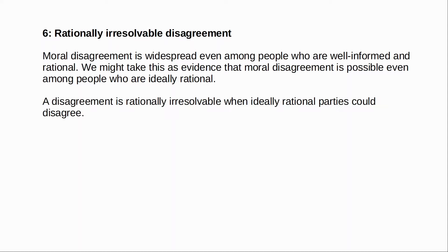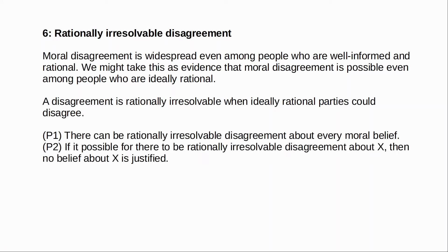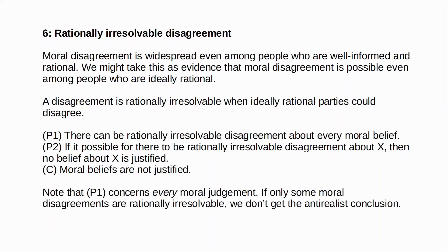To formalize it: a disagreement is rationally irresolvable when ideally rational parties could continue to disagree. The argument goes: there can be rationally irresolvable disagreement about every moral belief; if it is possible for there to be rationally irresolvable disagreement about X, then no belief about X is justified; so moral beliefs are not justified. Notice that premise one is a very strong claim — it concerns every moral judgment. The anti-realist needs to say that because if only some moral disagreements were rationally irresolvable, you could still have justified beliefs in the other cases. So to get to the anti-realist conclusion, we need to suppose that all moral judgments are open to rationally irresolvable disagreement — for every moral judgment, somebody might disagree with it without making any rational error.